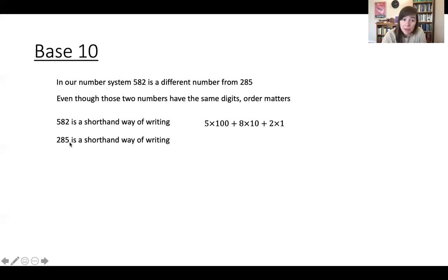Something like 285 is a shorthand way of writing. I'll pause and let you think about it. It's just 2 times 100 plus 8 times 10 plus 5 times 1. Okay, 582 is 500 plus 80 plus 2. 285 is 200 plus 80 plus 5.